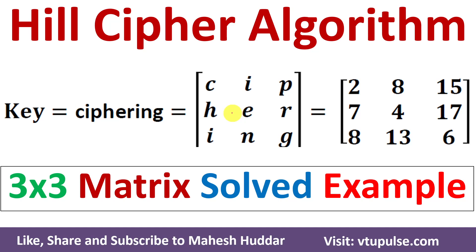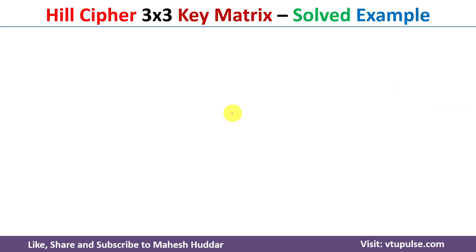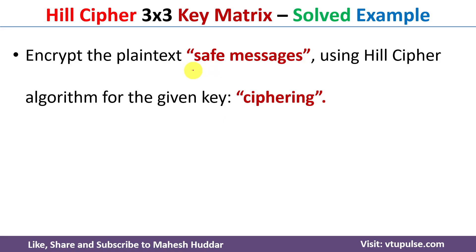Welcome back. In this video I will discuss how to use the Hill cipher algorithm to encrypt a given plain text and how to decrypt the ciphertext into plain text, with the help of a simple solved example. In this case we have been given a plain text 'safe messages'. We need to convert this into a ciphertext using the Hill cipher algorithm, where 'ciphering' is the key given to us.